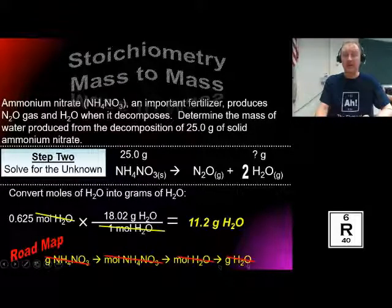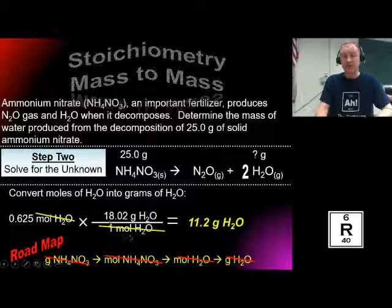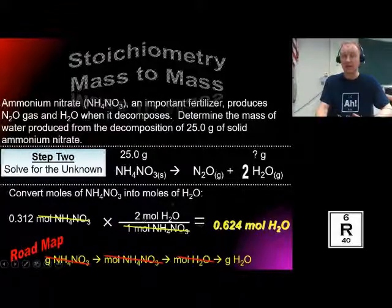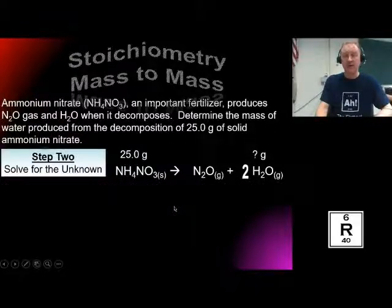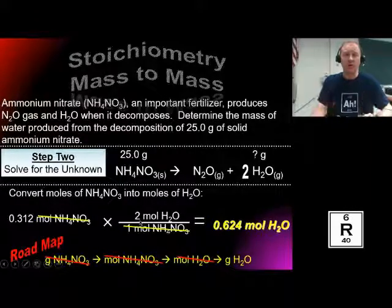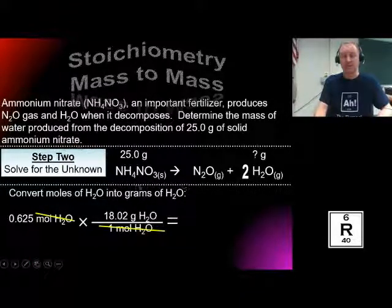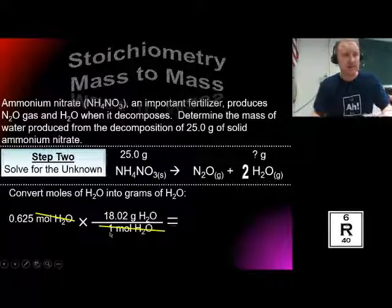I've gone through the roadmap all the way to the answer. Keep these steps clear: molar mass is always grams per one mole, and the coefficients from the balanced equation only come into play in the stoichiometry step — converting moles of one substance into moles of another. A common mistake is students see the coefficient two for water and want to use it again in the molar mass step, but you've already accounted for that two. You only count for it once. When going from grams to moles, you don't need the coefficients of a balanced equation at all.